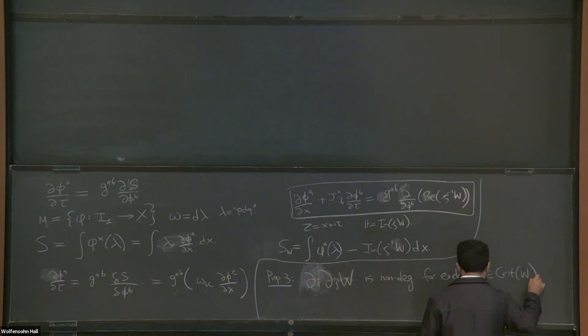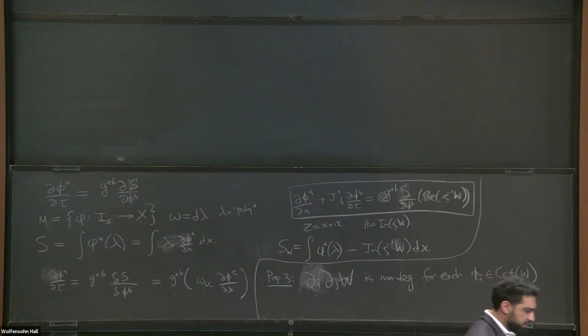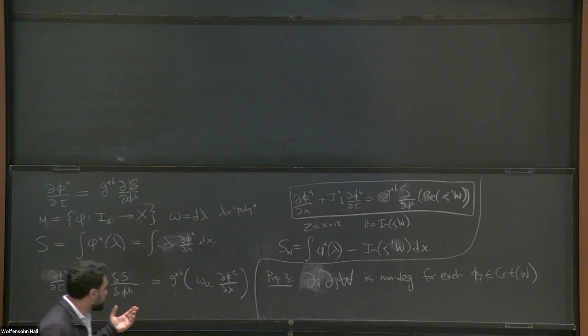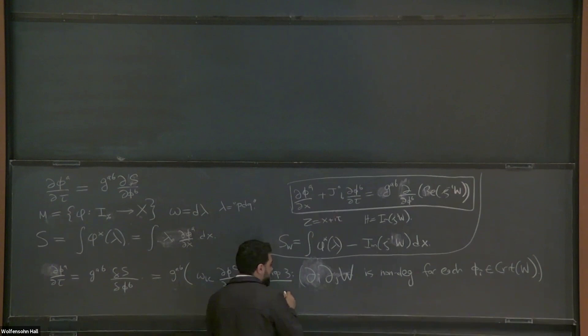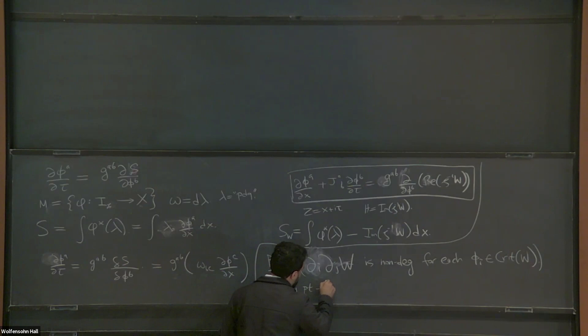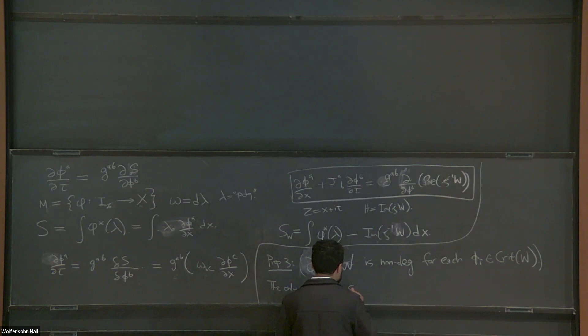Usually, you think of an instanton as some local disturbance in spacetime — outside a certain region, things settle into a unique vacuum. That's certainly true for self-dual instantons. But for the zeta instanton equation with a massive superpotential, the only solutions that settle into a vacuum at infinity are constant solutions. The only point-like solutions are constant maps to the critical points of W.